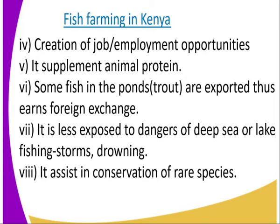Number five, fish is a permanent source of animal protein — where you have eaten fish, there is no need for eating any other animal protein. Number six, some fish in the ponds, like the trout, are exported, and thus we earn foreign exchange. Number seven, fish farming is less exposed to the dangers of the deep sea or lake fishing, such as storms and drowning.